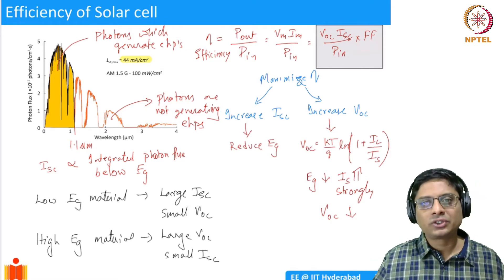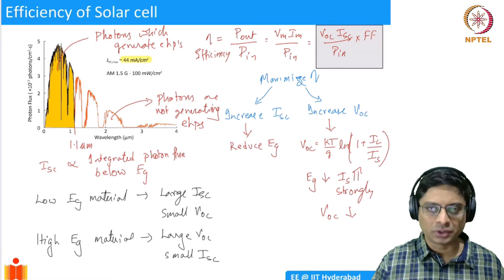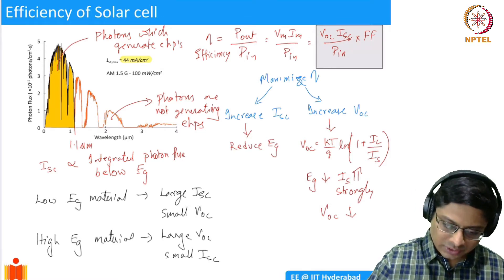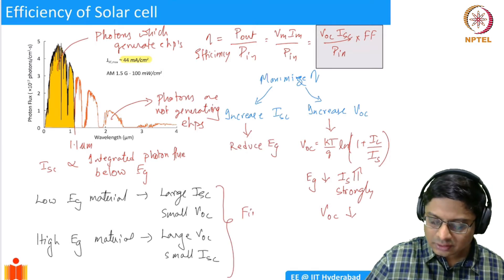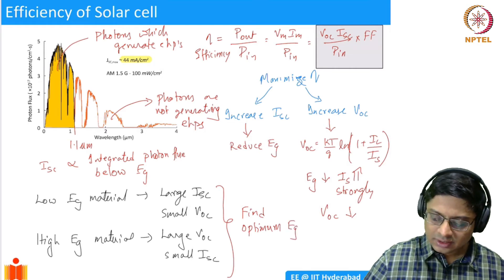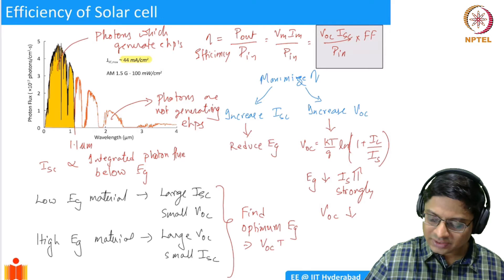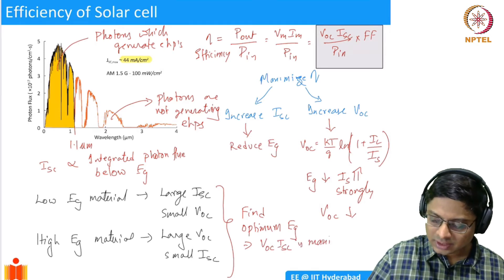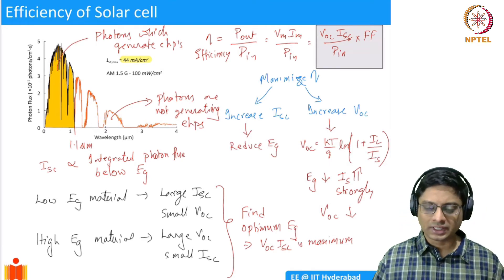What we want is to maximize the product of short circuit current and open circuit voltage. We need to find the optimum Eg such that Voc times Isc is maximum — that is where we get the best output power.